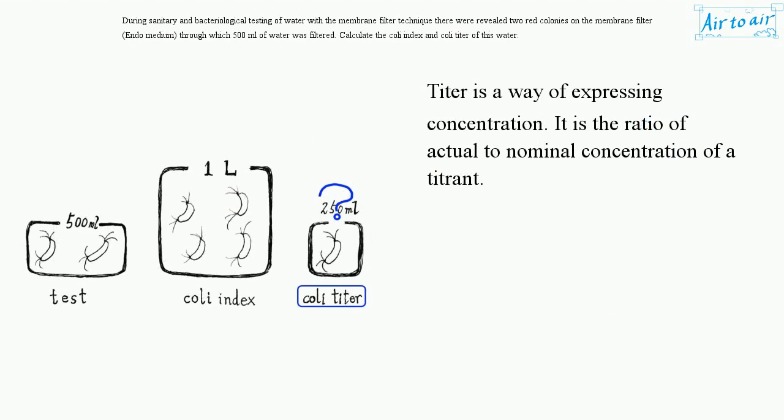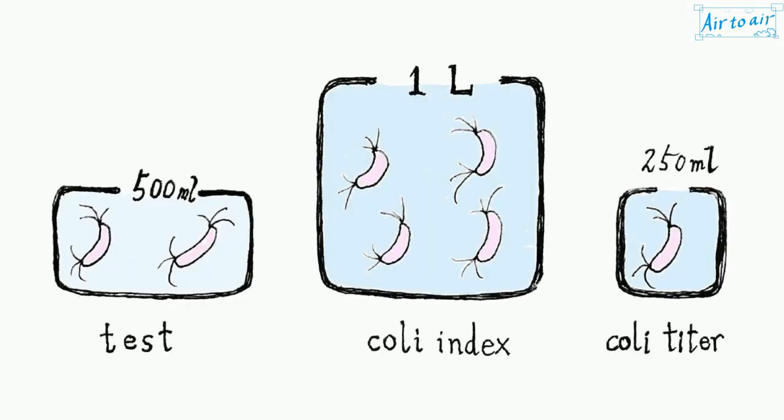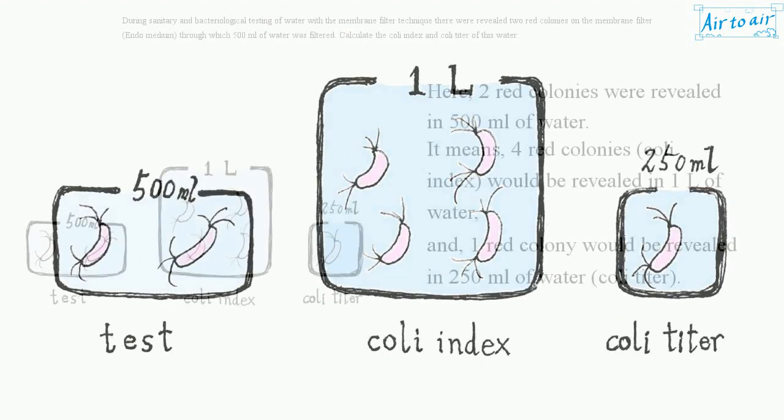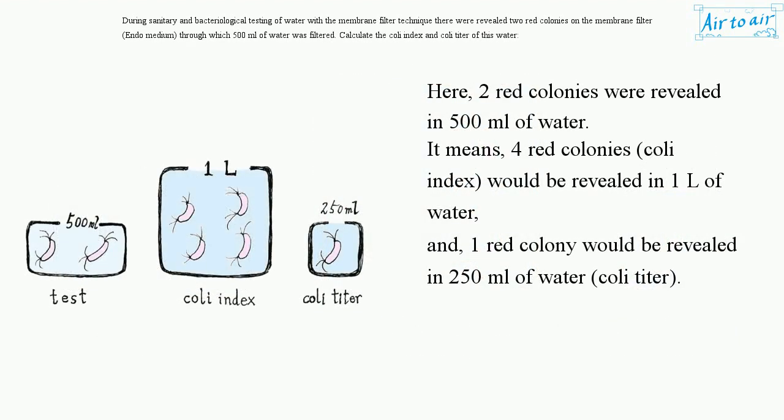Titer is a way of expressing concentration. It is the ratio of actual to nominal concentration of a titrant. Here, two red colonies were revealed in 500 milliliters of water.